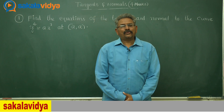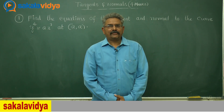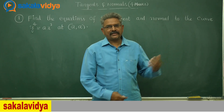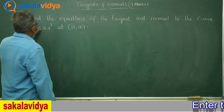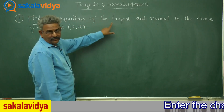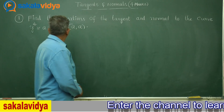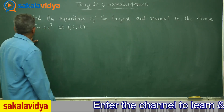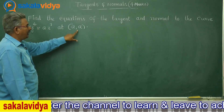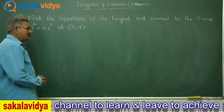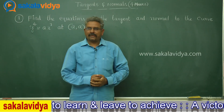Let us discuss the four marks problems on tangents and normals. First, let me read the question. Find the equations of the tangent and normal to the curve y to the power of 4 is equal to ax cube at the point (a, a). Let us discuss the strategy to solve this problem.